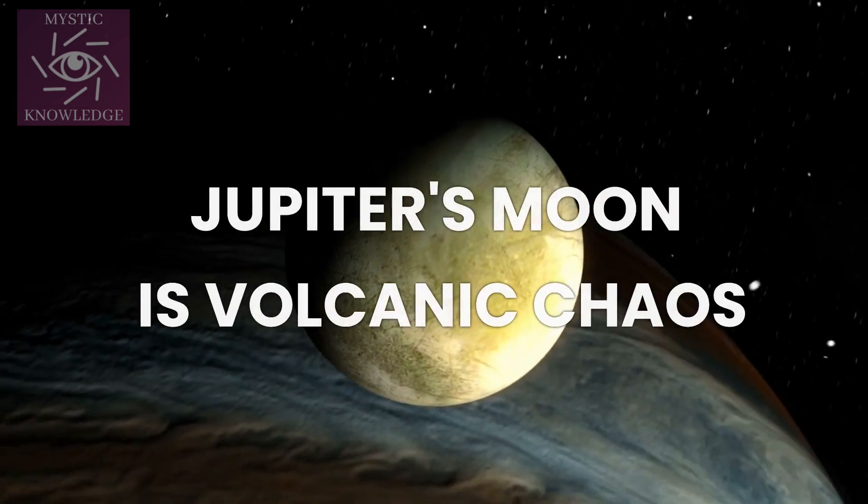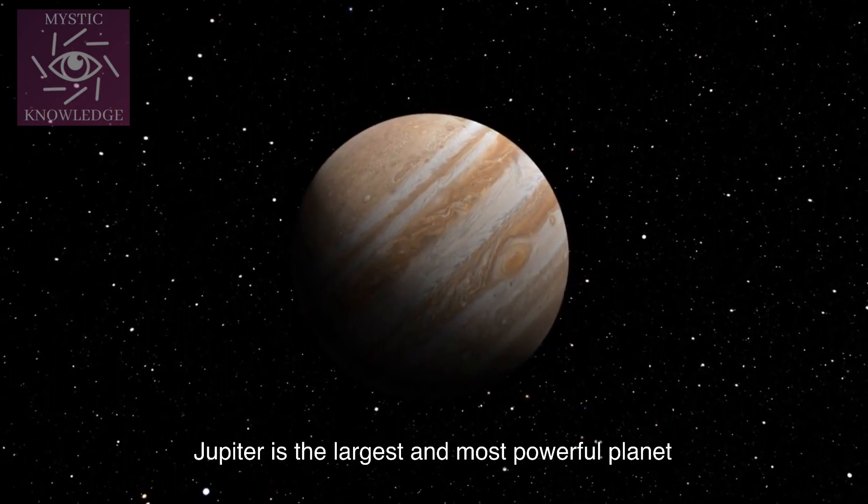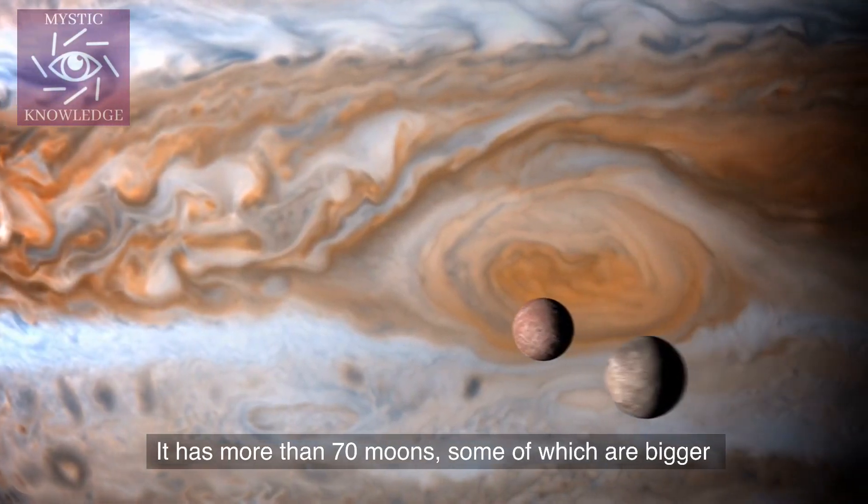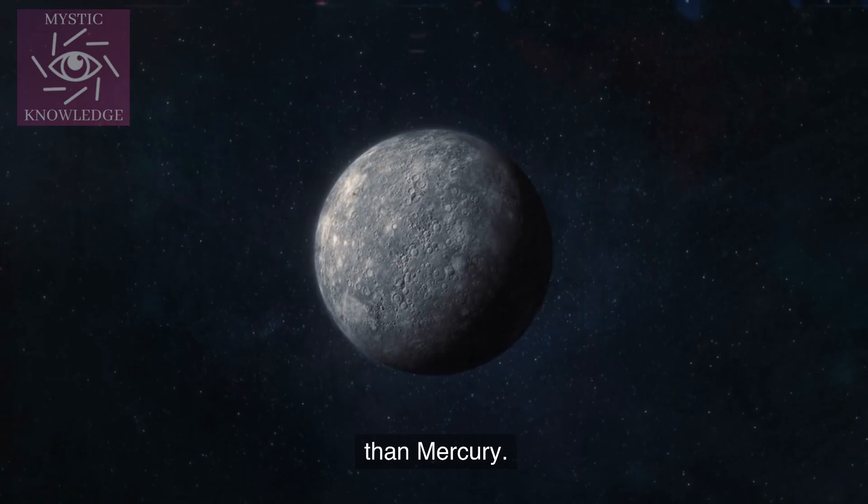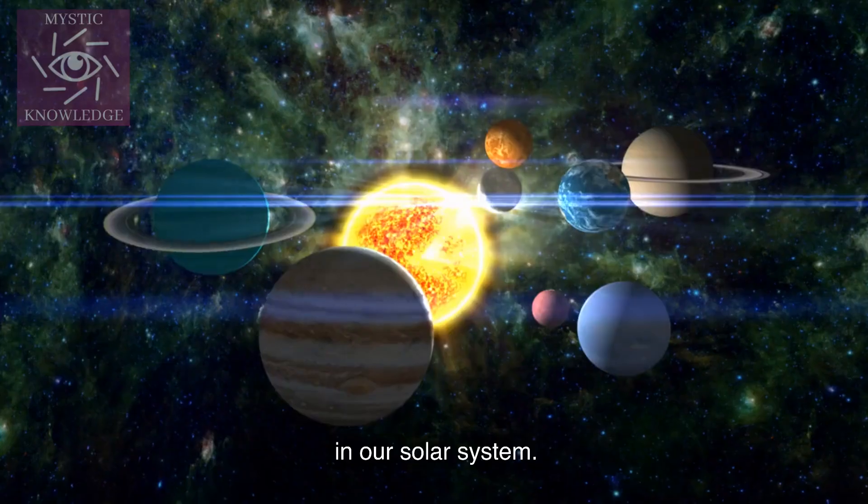Number 2. Jupiter's Moon is Volcanic Chaos. Jupiter is the largest and most powerful planet in our solar system. It has more than 70 moons, some of which are bigger than Mercury. One of these moons is Io, which is the most volcanically active body in our solar system.